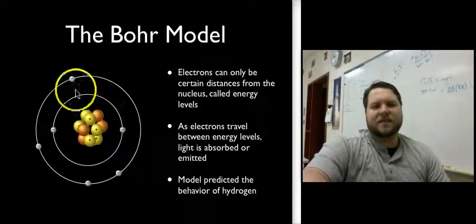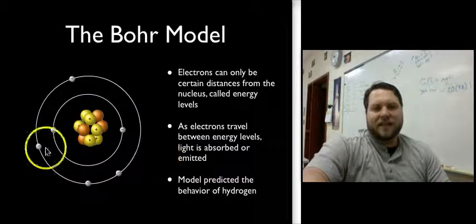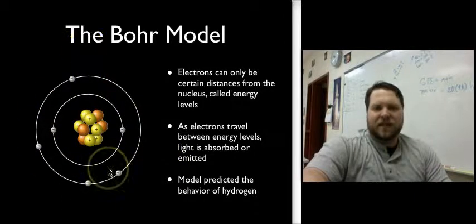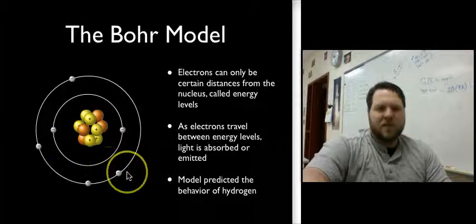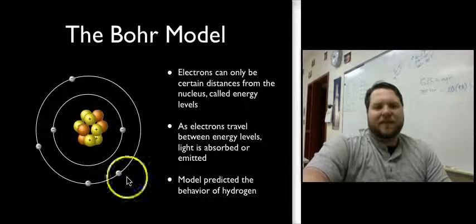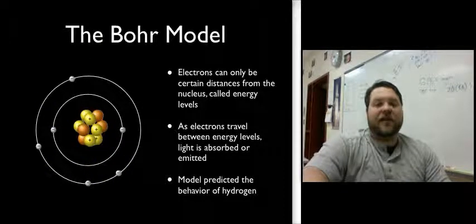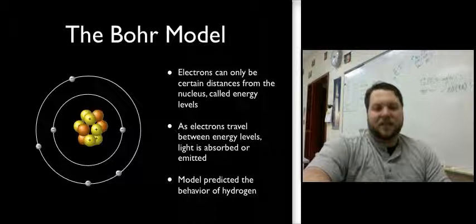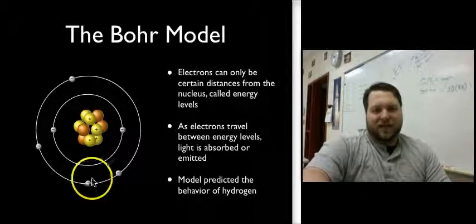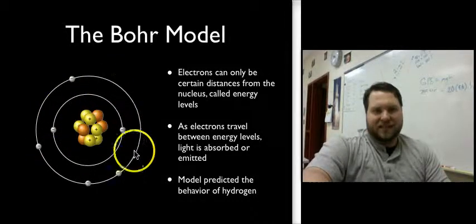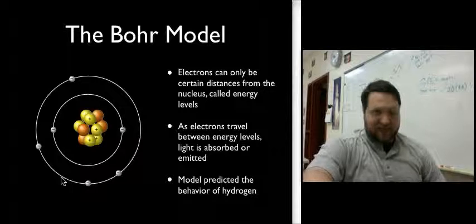And so the electrons can circle in these energy levels, again, just like planets around the sun. But what's different about this is that the electrons are not allowed to exist in between the energy levels. That is, in this space in between is nothing. Electrons simply cannot be there.